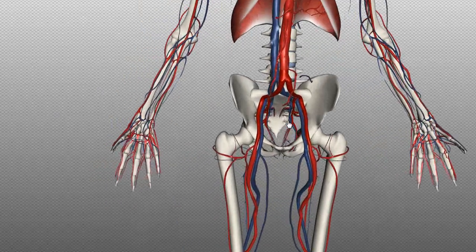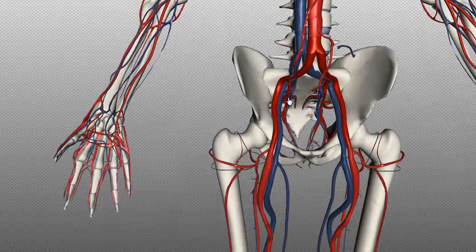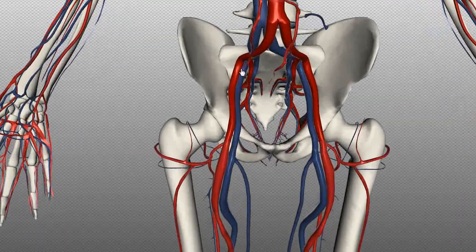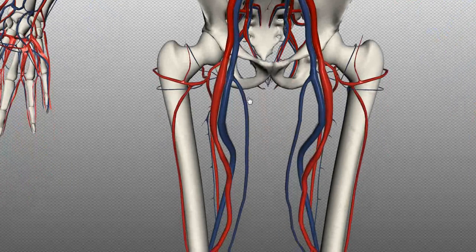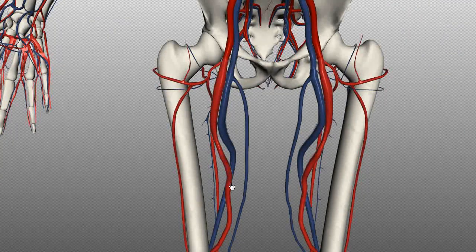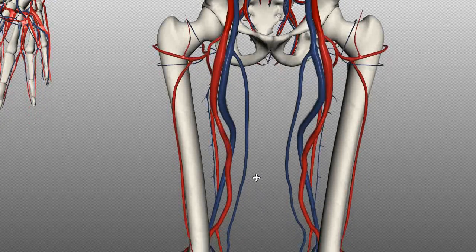Going back to the external iliac arteries which come off the common iliac, they then become the femoral arteries at roughly the level of the head of the femur. The femoral arteries run down the length of the femur on both sides.